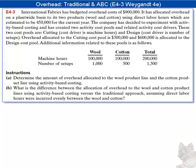The instructions are: Part A, determine the amount of overhead allocated to the wool product line and the cotton product line using activity-based costing. Part B, determine the difference between the allocation of overhead to the wool and cotton product lines using activity-based costing versus the traditional approach.